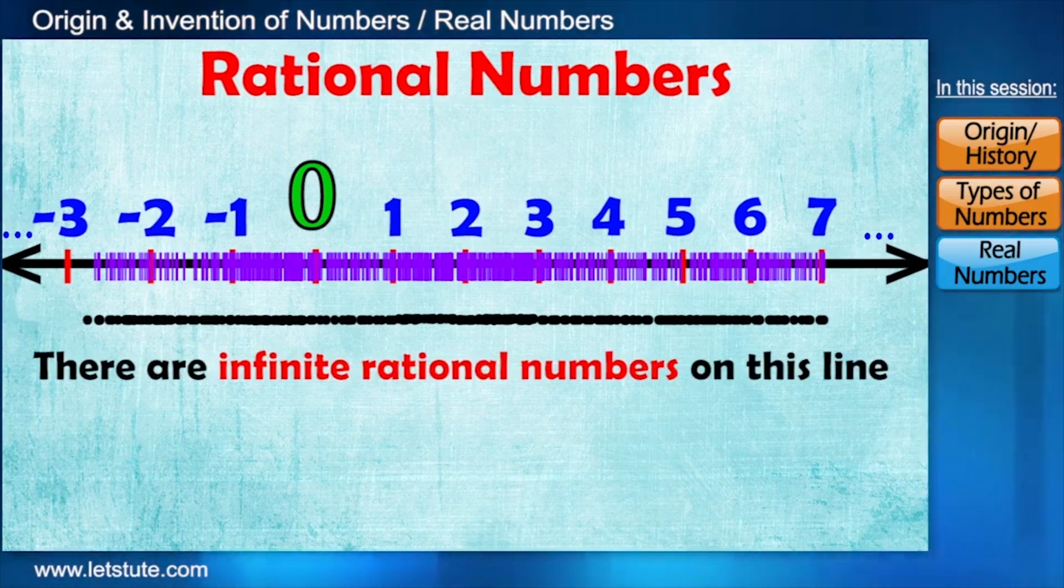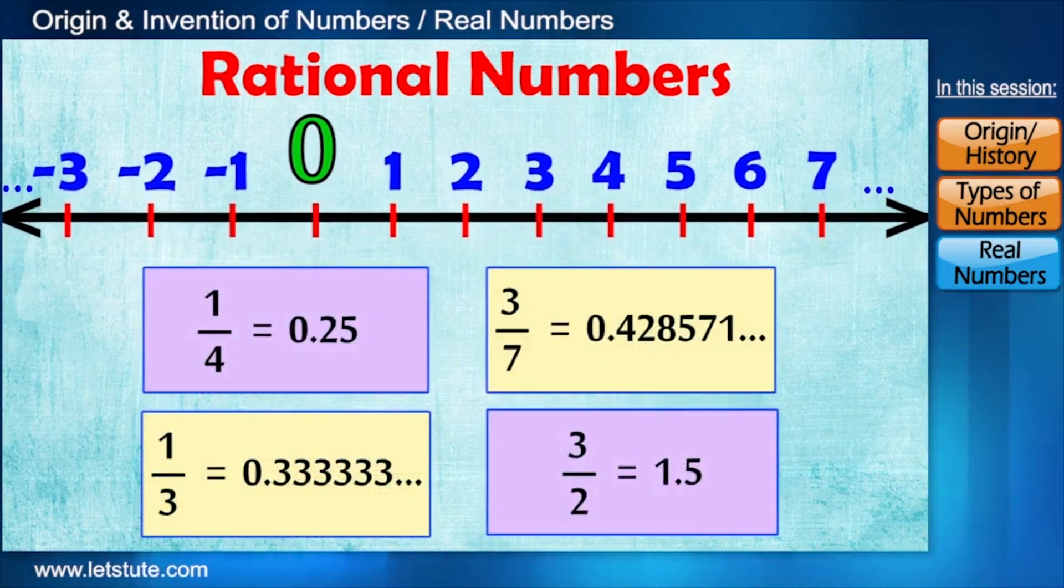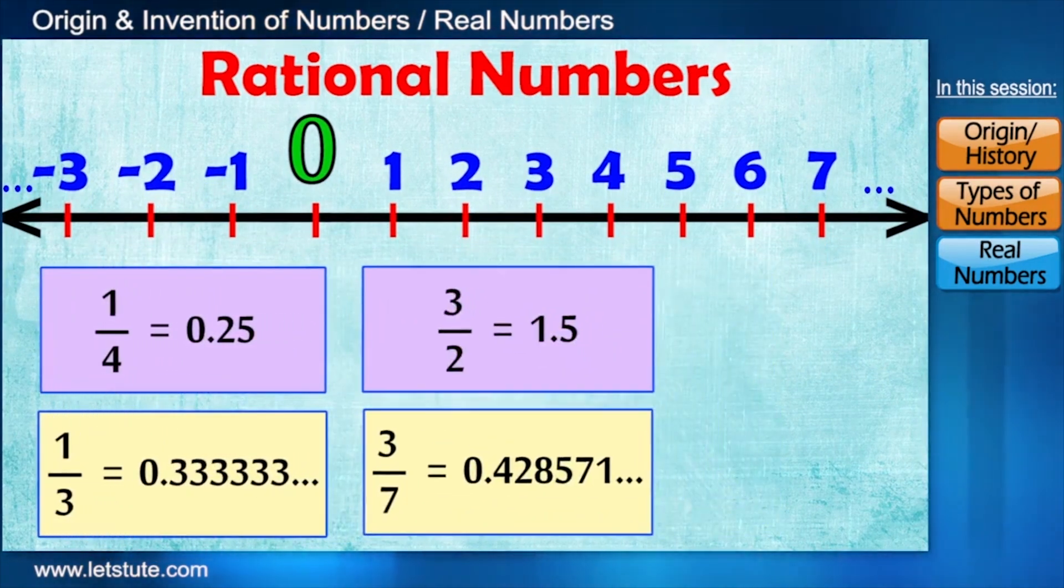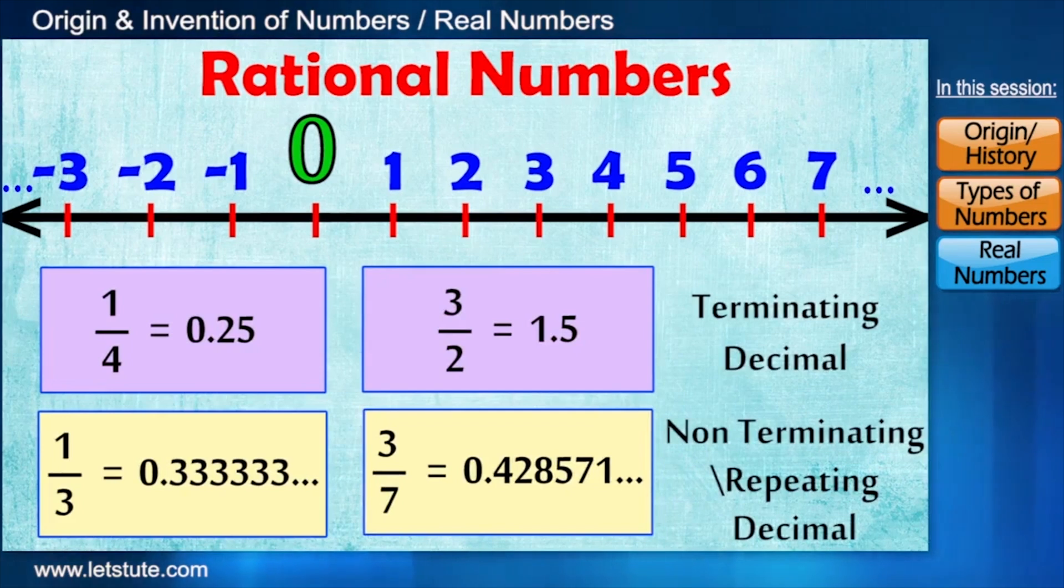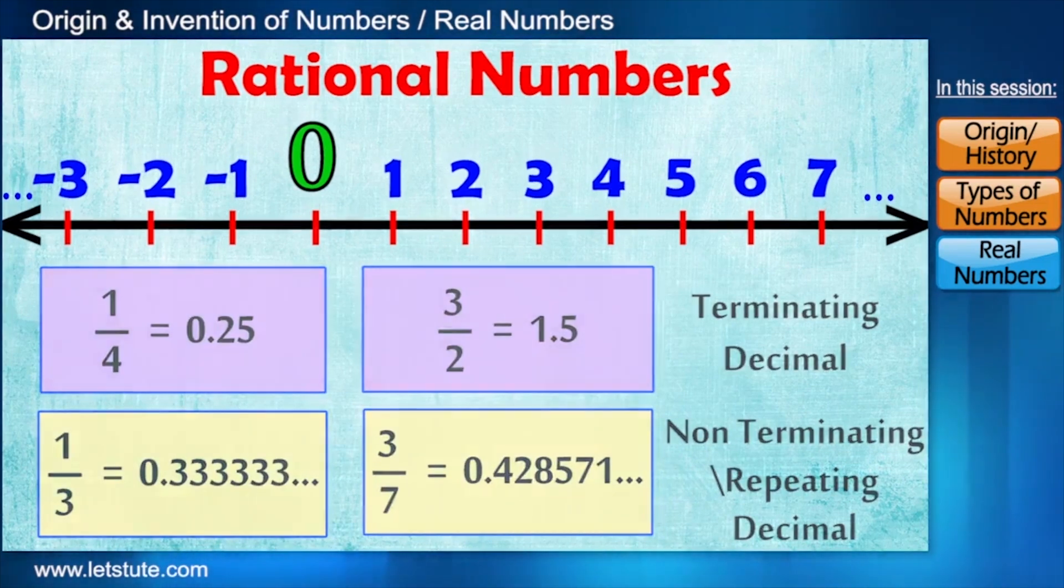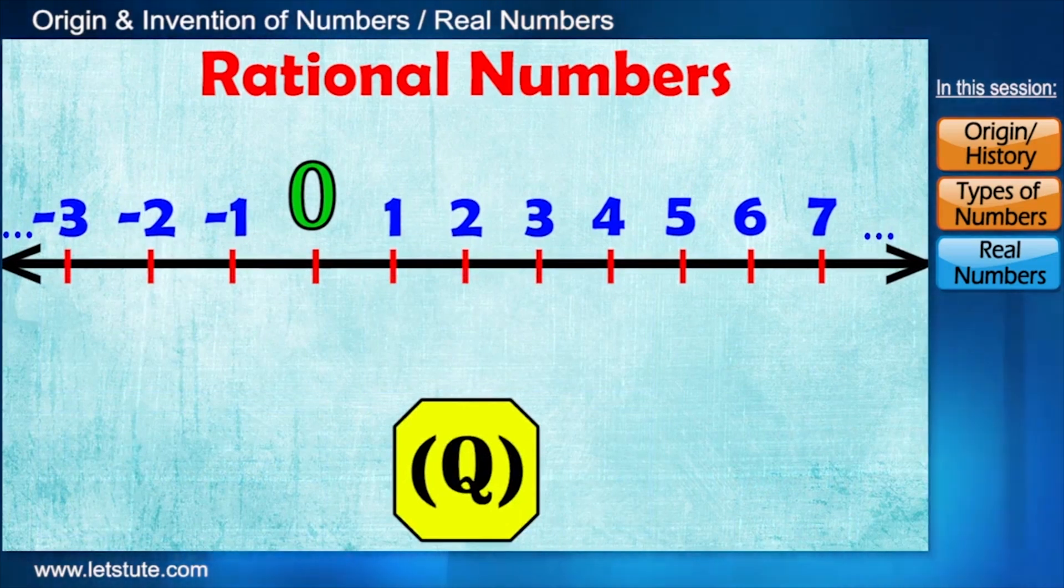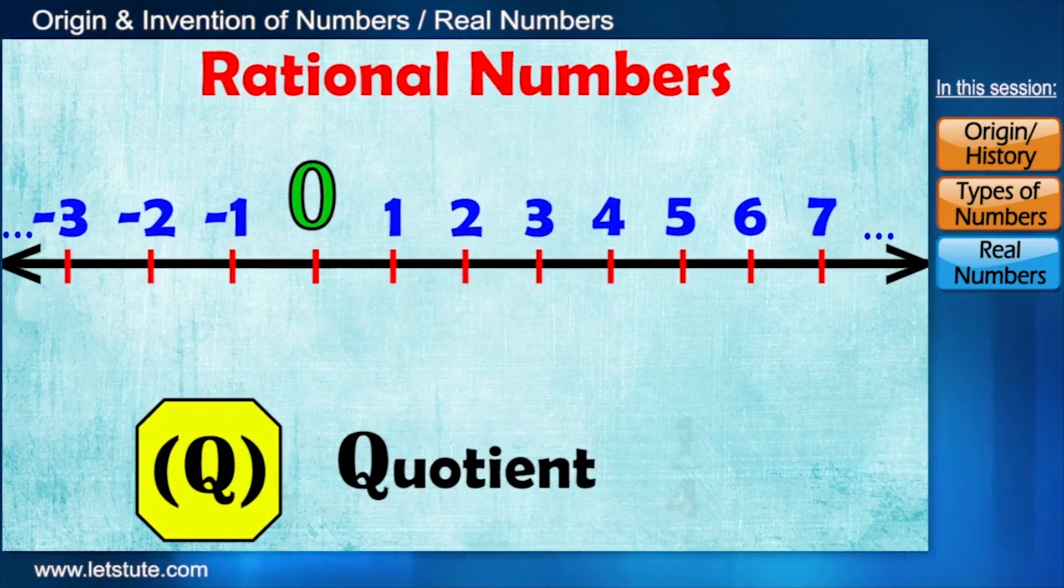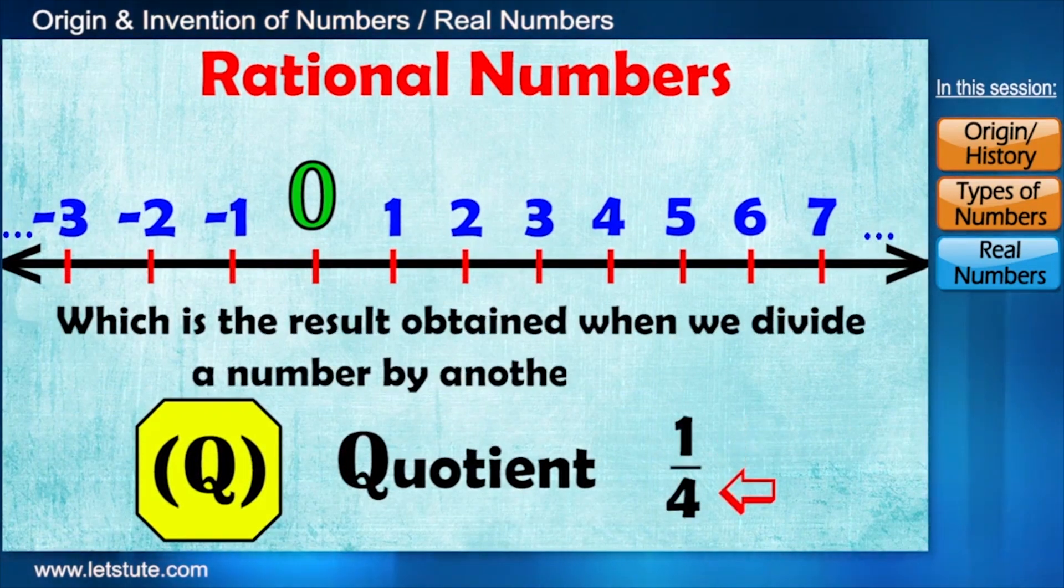Let me also tell you, we can also represent the rational numbers in this way. One in which the digit stops at certain point, and in second, some digits keep go on repeating forever. Set of rational numbers are denoted by the letter Q. Now, why Q? Well, here Q stands for quotient, which is the result obtained when we divide a number by another number.